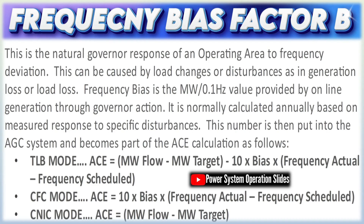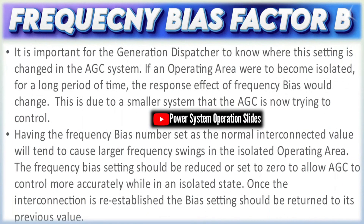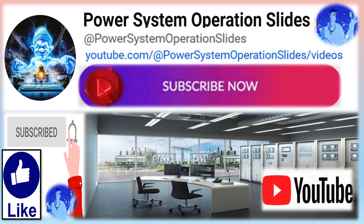AGC stands as a cornerstone of modern power system operation. Its design is a blend of real-time control theory, practical operational constraints, and economic considerations. Continuous improvements in measurement technology, communications, and control algorithms — including adaptive and even learning-based strategies — are enabling AGC systems to evolve in complexity and responsiveness, especially in grids with high levels of renewable and distributed generation. While traditional AGC systems relied on fixed parameters and classic PI control loops, newer implementations may incorporate predictive controls or machine learning techniques to better cope with rapidly varying operating conditions and system inertia challenges.